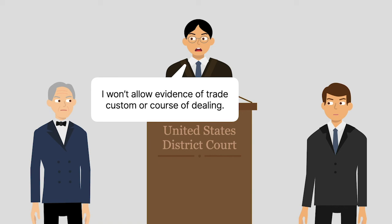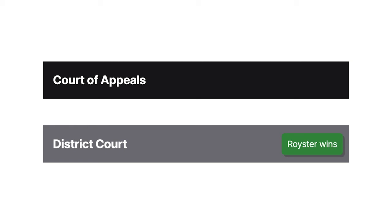The district court refused to allow any evidence of trade custom or course of dealing. The jury found in Royster's favor, and the district court entered judgment for Royster for $750,000. Columbia appealed to the Fourth Circuit.